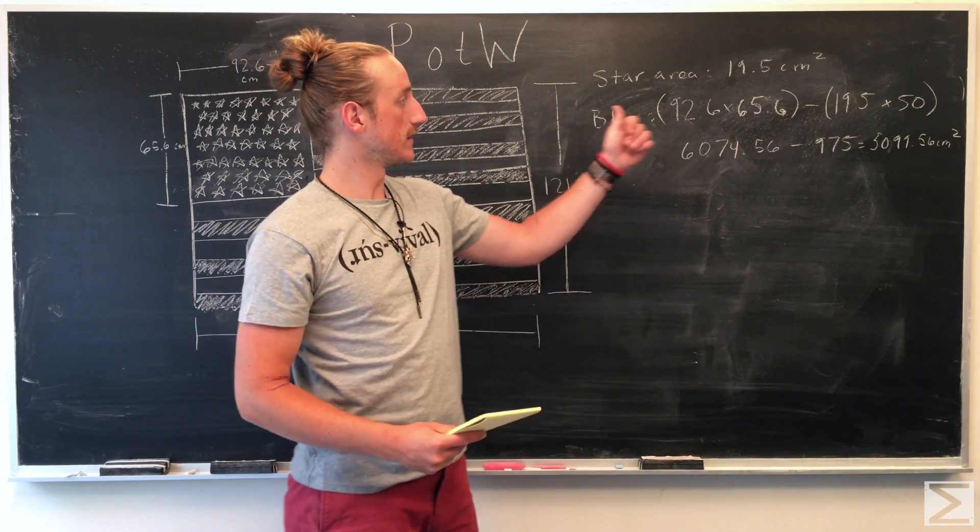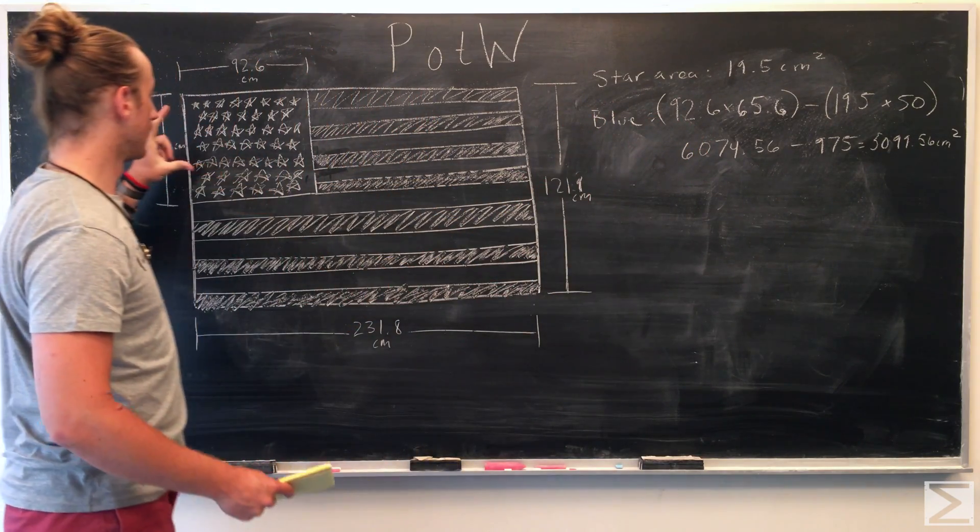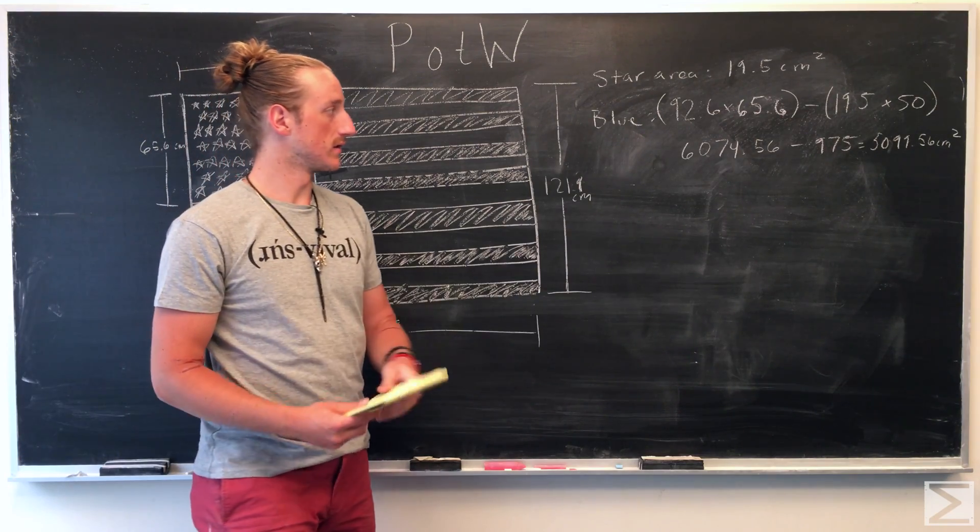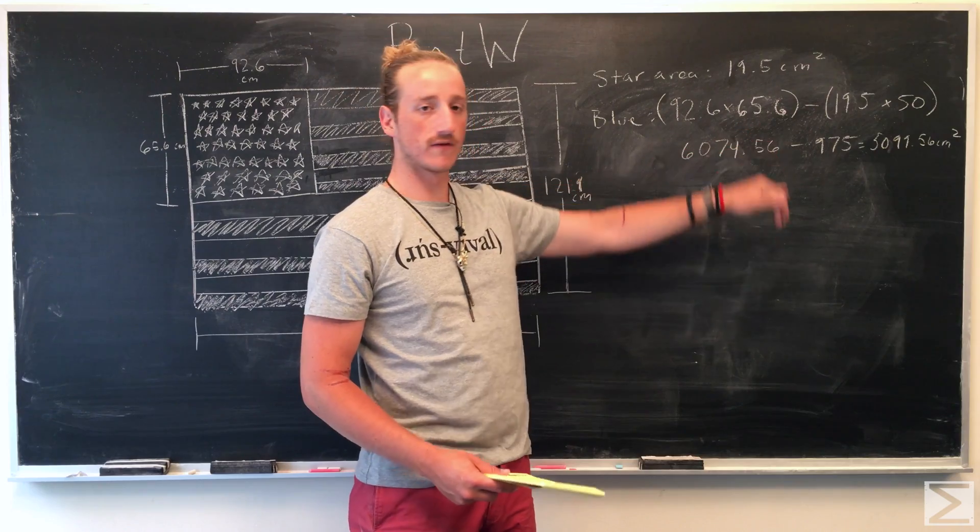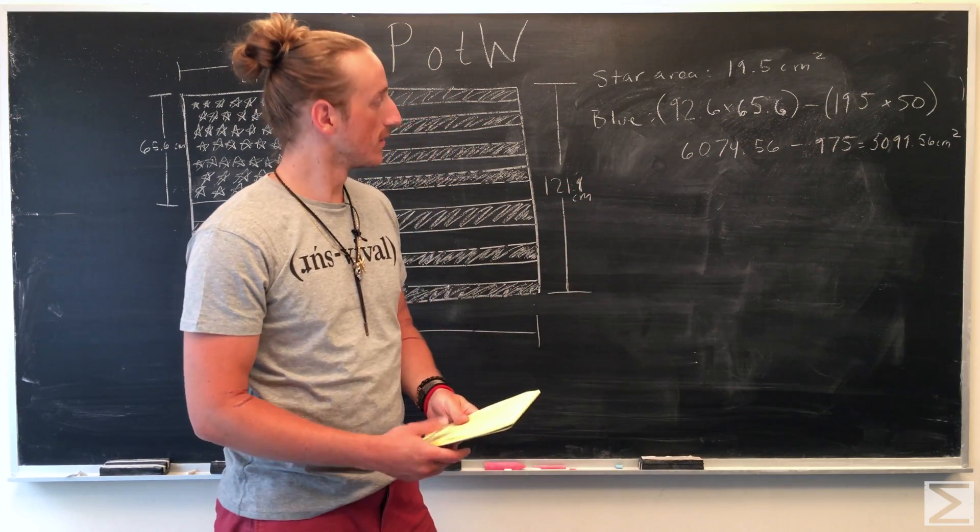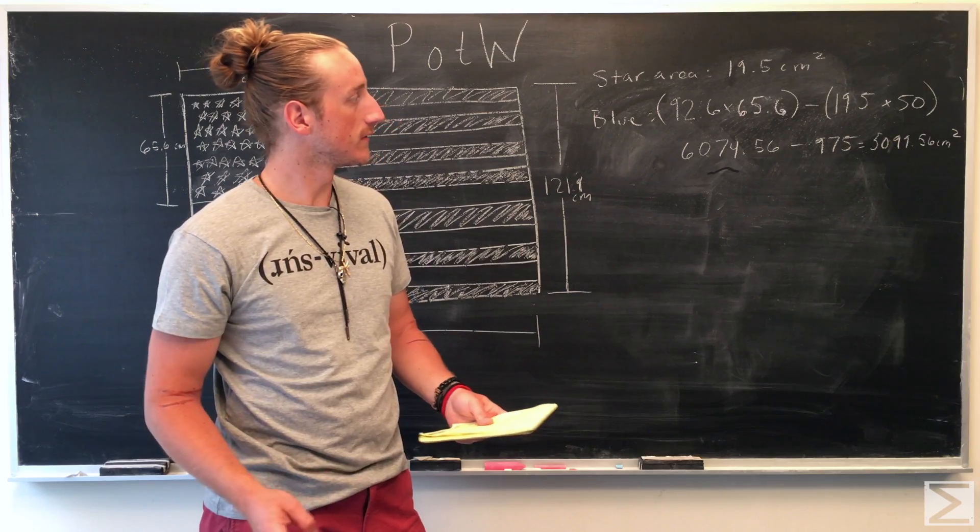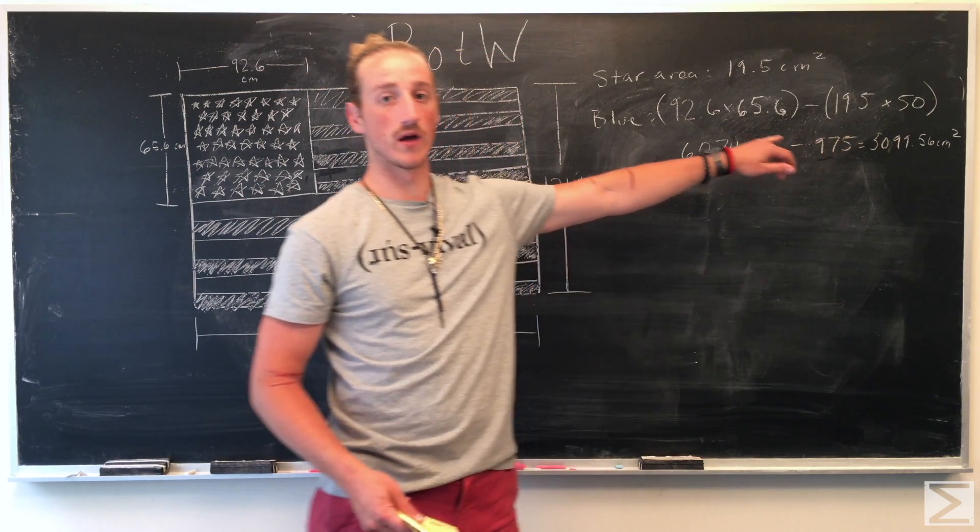Looking at each of the stars and then subtracting that from the area of this rectangle up here, we see that the total area of the rectangle is 92.6 times 65.6 centimeters squared, which gives us 6074.56 minus 975, which is the area of each of the white stars.